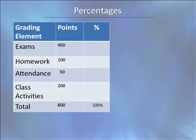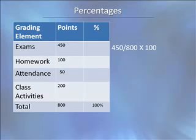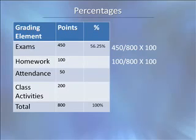The total 800 points is always 100%. Divide the exam points, 450, by the total points, 800. This results in a decimal of 0.5625. Multiply that amount by 100 to convert it to a percentage. Continuing with the math, divide the 100 homework points by the total 800 and multiply by 100 to get 12.5%.